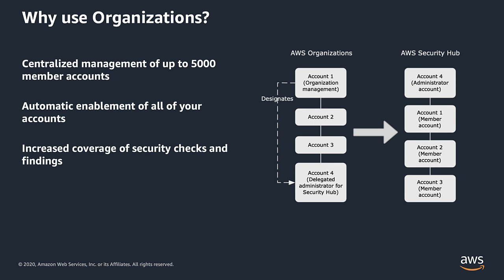AWS Organizations provide centralized management for your accounts. Using your organization structure makes it easier to enable Security Hub for all of your accounts. This increases the coverage for Security Hub checks and findings, which provides a more accurate picture of your overall security posture.